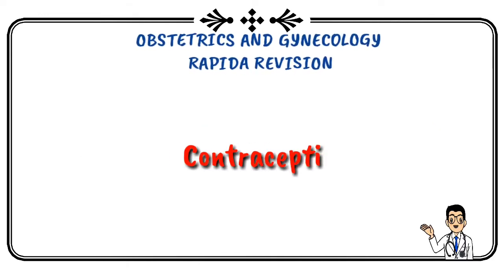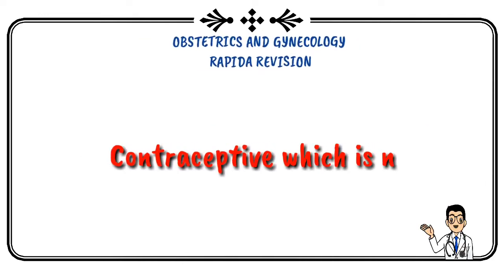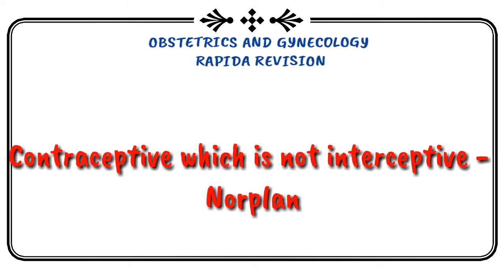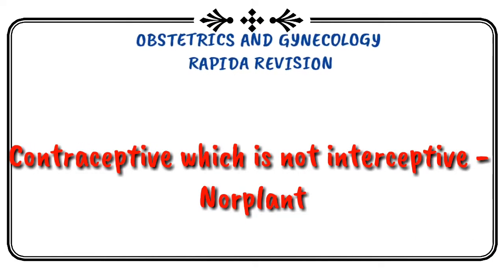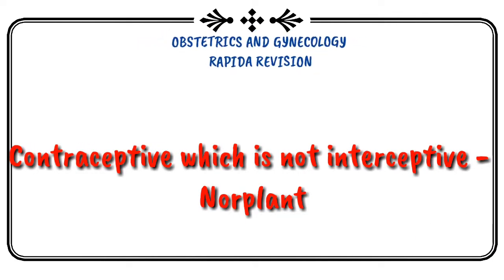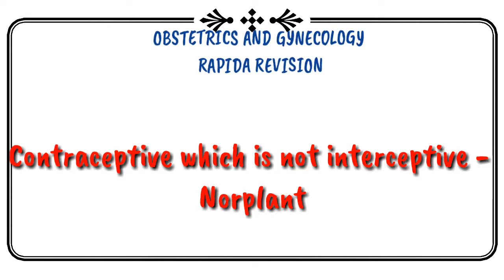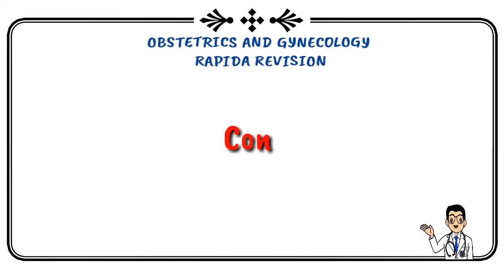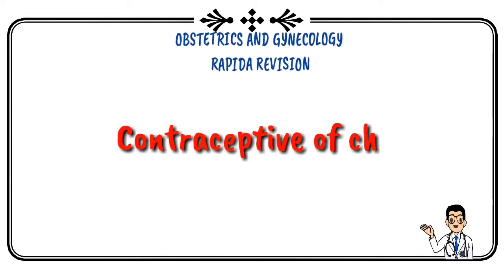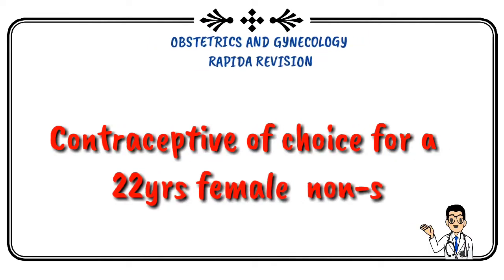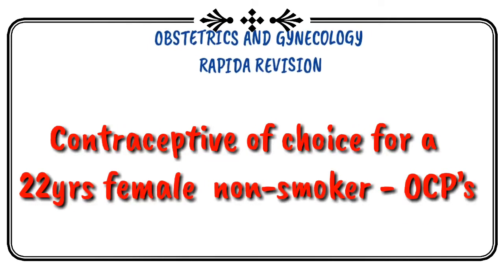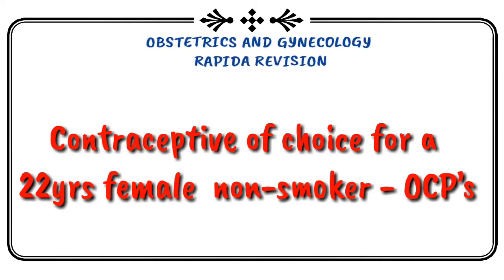Contraceptive which is not interruptive is Norplant. Contraceptive of choice for a 22-year-old non-smoker female is oral contraceptive pill.